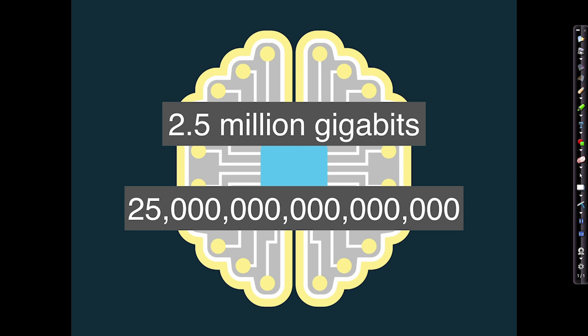If you're wondering how much information can be generated by all of the cortical columns of the brain, it's around two and a half million gigabytes — that's 25 with 15 zeros after it. So it's a very, very large number. This massive amount of information that your cortex can generate by selecting states and patterns of column activation is the information experienced as your subjective world.